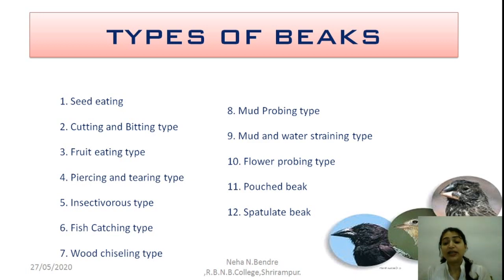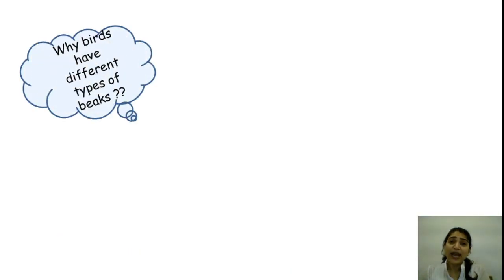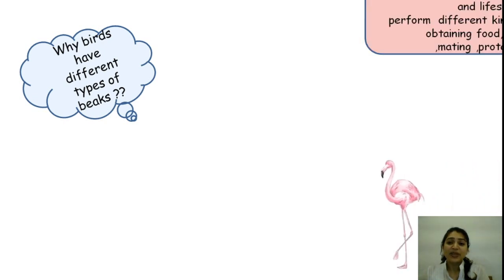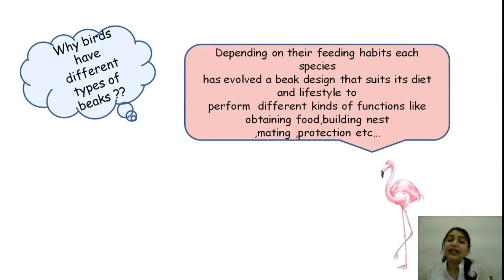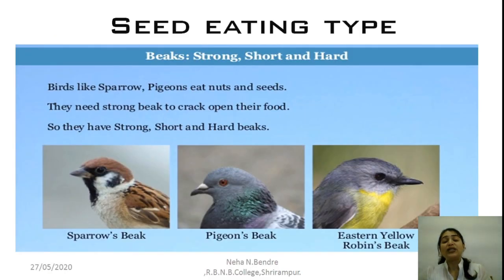Let's look further at these types of beaks in detail. The question arises: why do birds have different types of beaks? The answer is that depending on their feeding habits, each species has evolved a beak design that suits its diet and lifestyle to perform different functions like obtaining food, building nests, mating, and protection. Let us see the first type: the seed eating type.